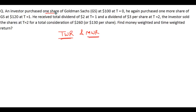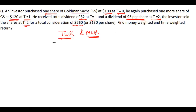The problem says that an investor purchased one share of Goldman Sachs at $100 at time t=0, and again purchased the same stock at $120 at t=1. He received a dividend of $2 at t=1 and a dividend of $3 per share at t=2. He sold the shares at t=2 for a total consideration of $260, that is $130 per share. They are asking you to compute the money weighted return and the time weighted return.